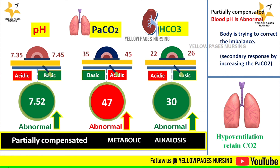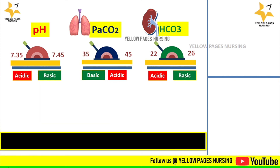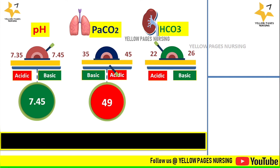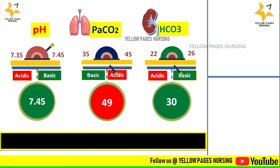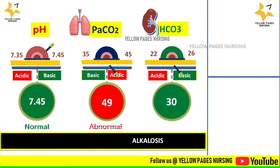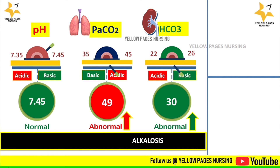In the next example of compensated metabolic alkalosis, the pH is 7.45 (almost within normal range), PaCO2 is 49 (above normal), and bicarbonate is 30 (above normal). Both pH and bicarbonate indicate a basic state consistent with metabolic alkalosis, but because the pH is nearly normal, this is called a fully compensated metabolic alkalosis.